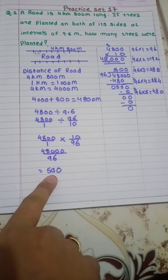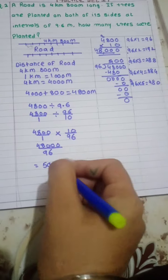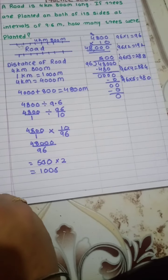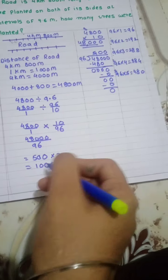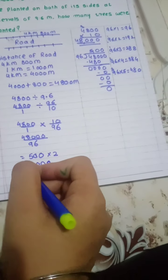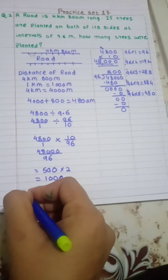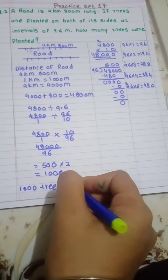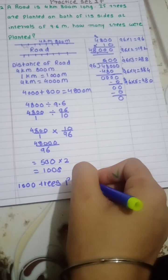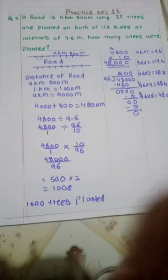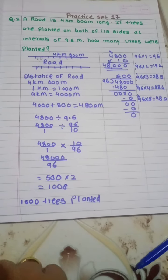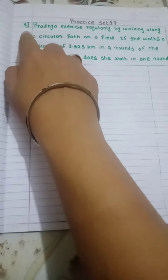But this is one side of the trees. I have to find both sides. So I will multiply 500 by 2, and the answer I am getting is 1000. So 1000 trees were planted. Now we will do the next one — practice set 17, question number 3.